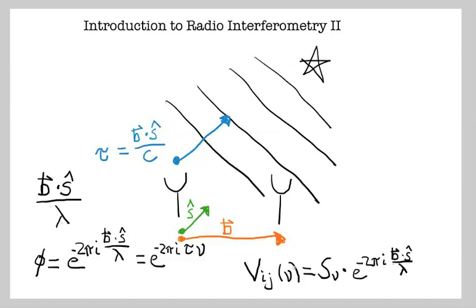Now we're going to take this phase term and extrapolate to figure out what the response pattern of these two antennas looks like on the sky. We can choose a different S — a different direction toward the source — which changes the phase term. To get intuition, we'll break out the three components of the baseline and the direction.